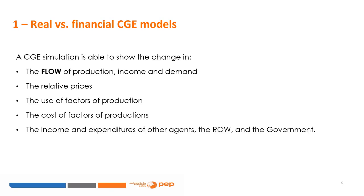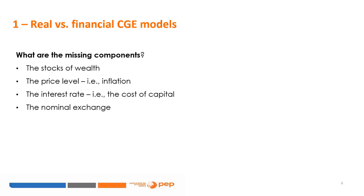However, the CGE approach is missing some important components of the economic system. Real CGE models fail to take into account the wealth composition of the economy in terms of stocks of assets, either real or financial, like bonds or money. The CGE approach is also unable to capture the role of three important macroeconomic variables: the price level and thus inflation, the interest rate such as the cost of capital, and the nominal exchange rate — the relative value of two currencies.